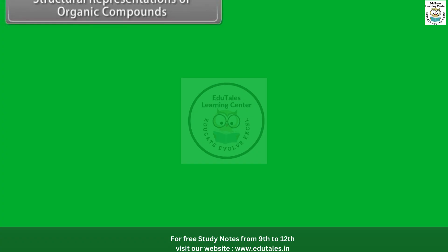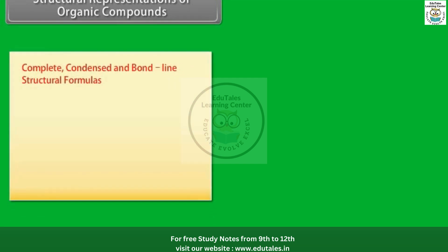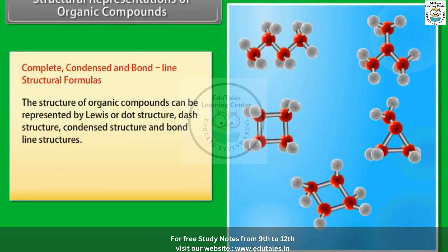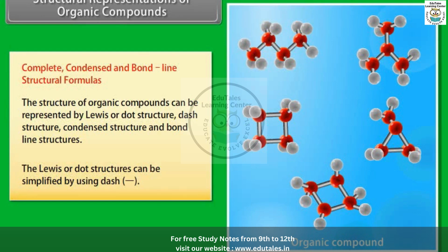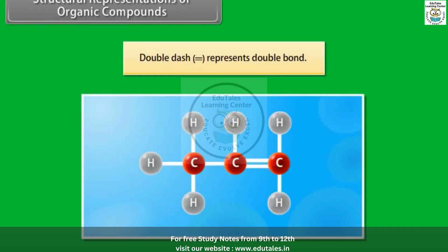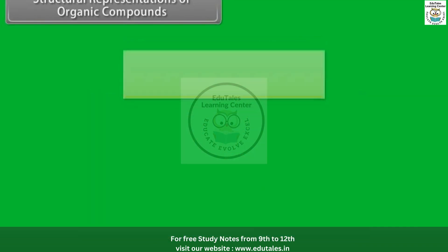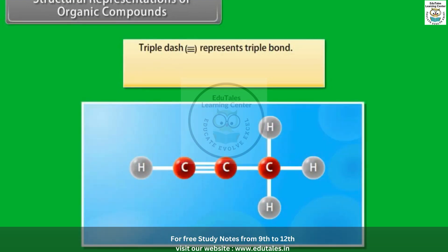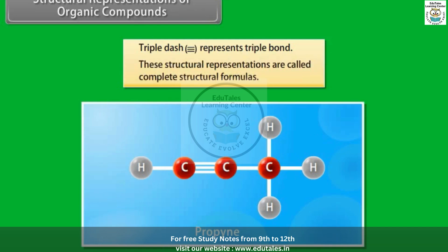Structural representations of organic compounds — complete, condensed and bond-line structural formulas. The structure of organic compounds can be represented by Lewis or dot structure, dash structure, condensed structure, and bond-line structures. The Lewis or dot structures can be simplified by using dashes: a single dash represents a single bond (e.g., propane), a double dash represents a double bond (e.g., propene), and a triple dash represents a triple bond (e.g., propyne). These structural representations are called complete structural formulas.